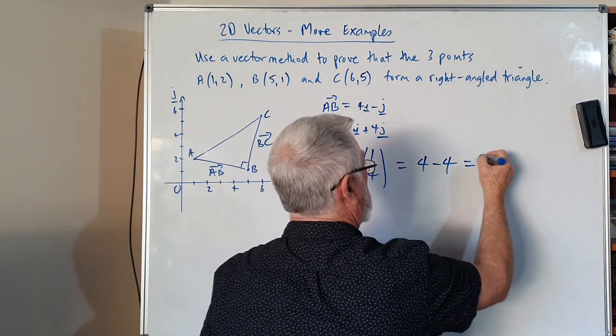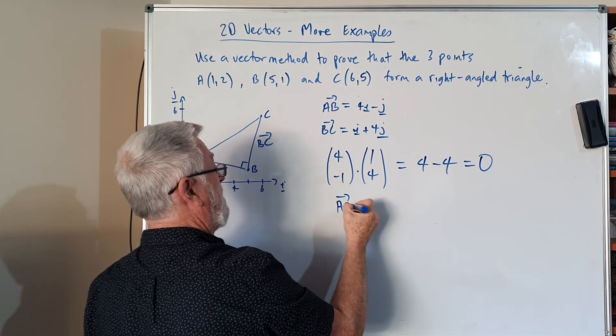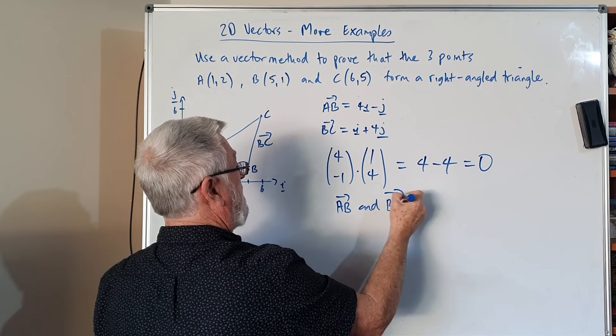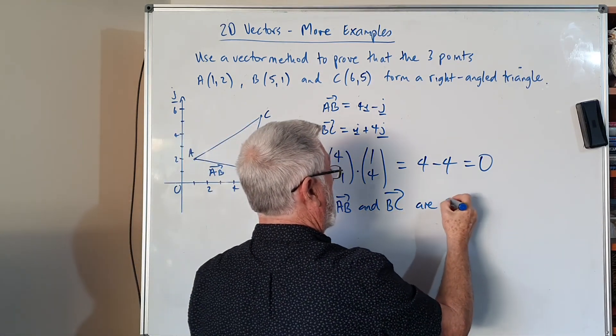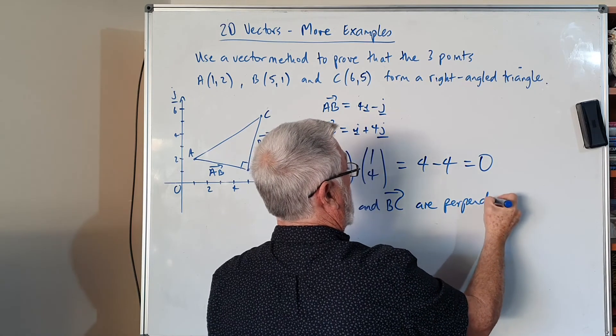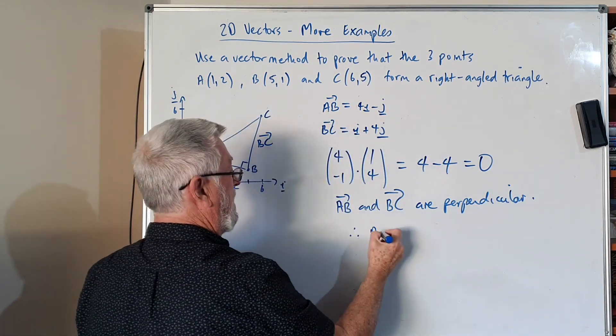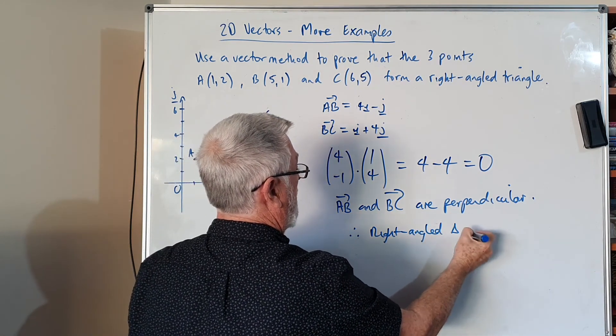So what do we say now? We have two of the vectors, AB and BC, are perpendicular. So what does it mean when two of them are perpendicular with three points? It means therefore we have a right angle triangle. Question's done.